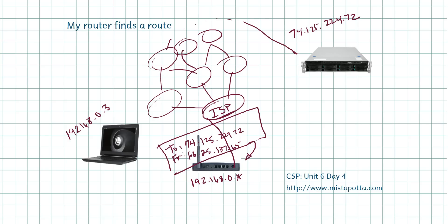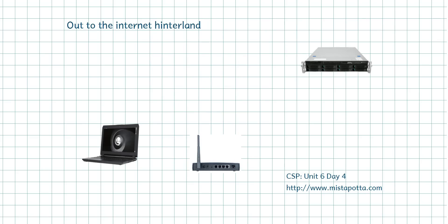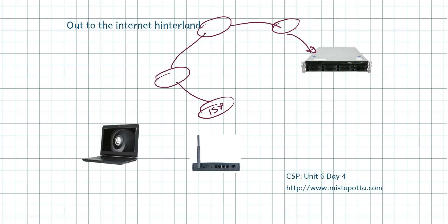My ISP is a router, and it's connected to other routers, and it's going to try and find the best path it can to Google. It may take 10, 20, or 30 hops, and they're constantly searching for a more efficient path. If there's a lot of congestion and a path isn't convenient anymore, it'll find alternate routes, backup routes. My router finds a route — all routers find a route. Eventually out in the internet hinterland, here's my ISP, and here's a path to one router, another router, another router, and this eventually gets to Google at 74.125.224.72.